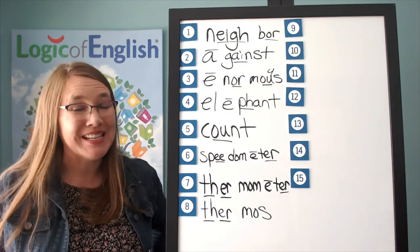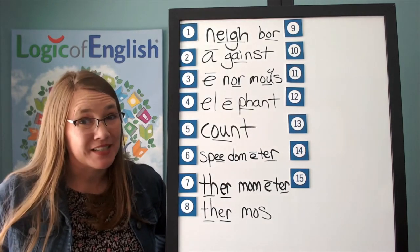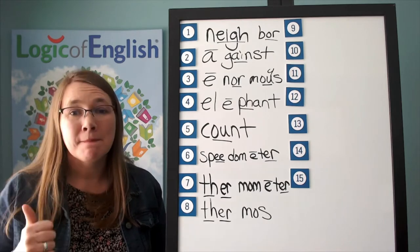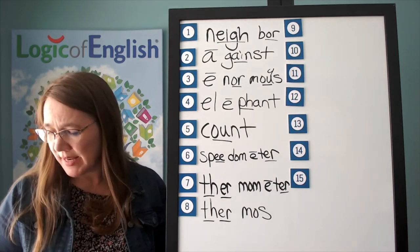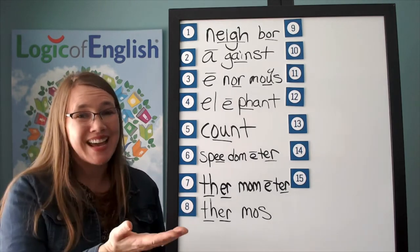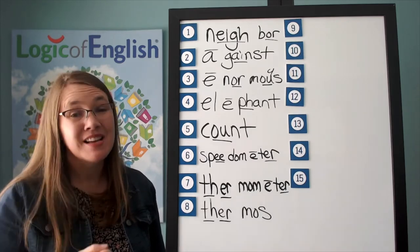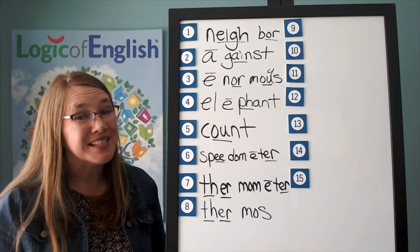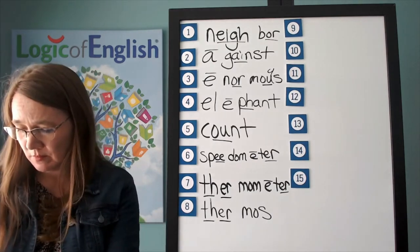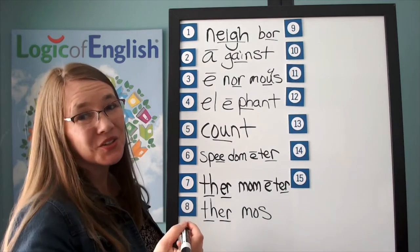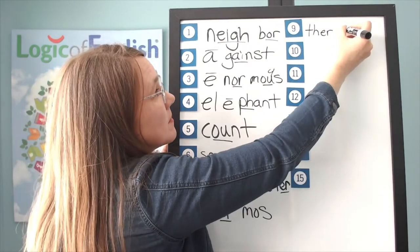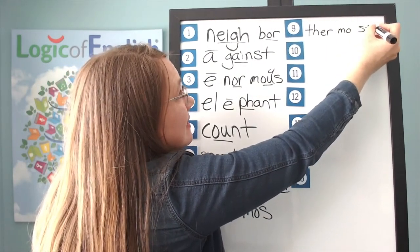The next word is thermostat. The thermostat is set to 68 degrees Fahrenheit. Thermostat. How many syllables? Three. We will say to spell therm-mo-stat. Let's sound it out: thur — use the ur of her; second syllable mo — M-O; third syllable stat — S-T-A-T. Go ahead and write thermostat. Help me to write it: thur, mo — M-O, stat — S-T-A-T.